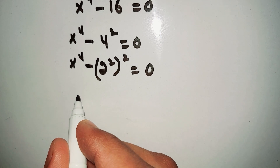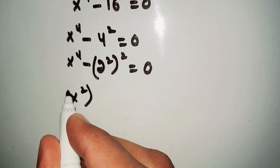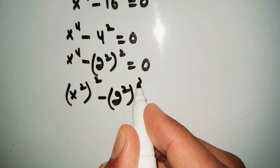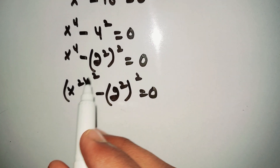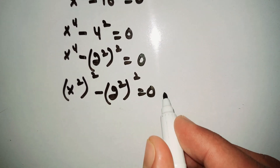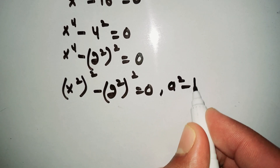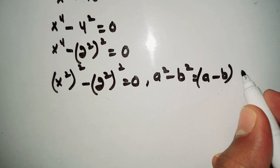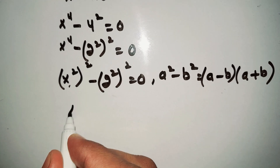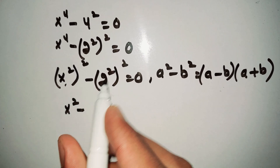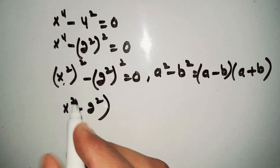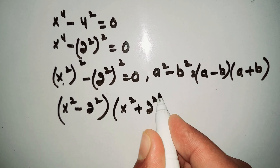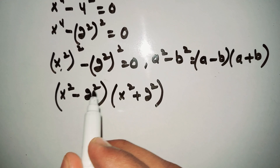We rewrite x⁴ as (x²)², so we have (x²)² - (2²)² = 0. Here we use the formula a² - b² = (a - b)(a + b), the difference of two squares. So we write (x² - 2²)(x² + 2²) = 0.